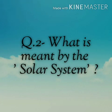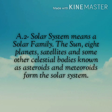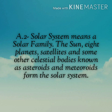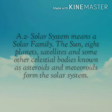Question number 2: What is meant by the solar system? The solar system means a solar family. The sun, 8 planets, satellites, and some other celestial bodies known as asteroids and meteoroids together form the solar system.